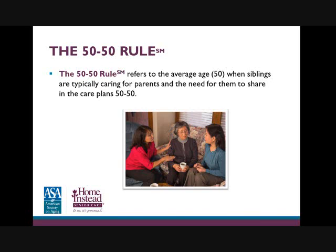Home Instead Senior Care has partnered with sibling relationship expert Dr. Ingrid Kondesis from the University of Western Ontario to develop the 50-50 Rule program to help siblings deal with the many issues associated with caring for their aging parents. The 50-50 Rule refers to the average age of about 50 when siblings are typically caring for their parents, as well as the need for brothers and sisters to equally share the caregiving and planning 50-50. If you're working with seniors with adult children around the age of 50, it's time for them to develop a plan, and this program can help.